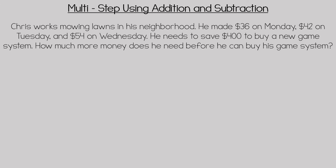This word problem is an example of a multi-step word problem using addition and subtraction. Chris works mowing lawns in his neighborhood. He made $36 on Monday, $42 on Tuesday, and $54 on Wednesday. He needs to save $400 to buy a new game system. How much more money does he need before he can buy this game system?